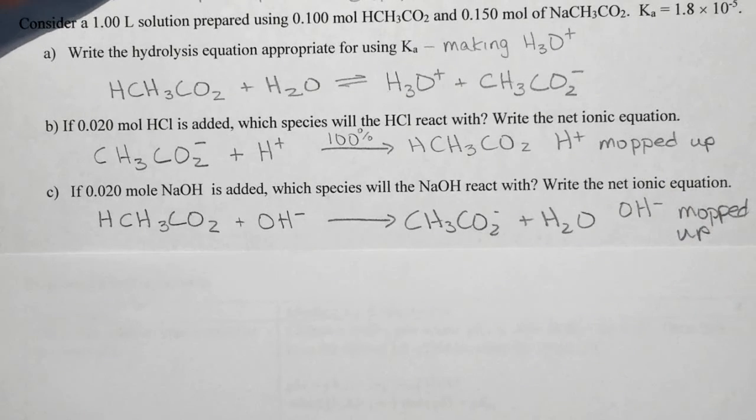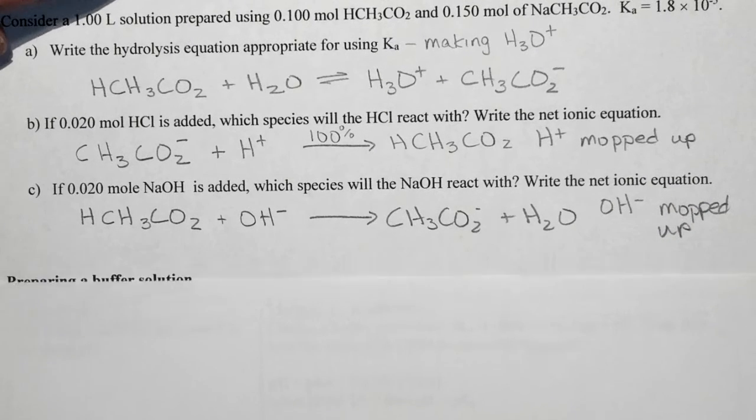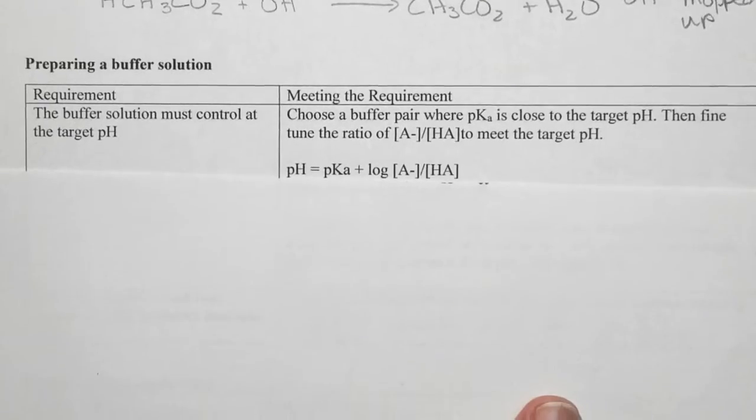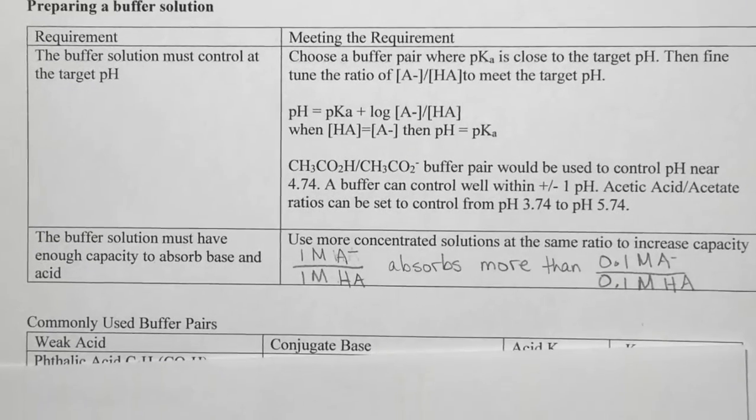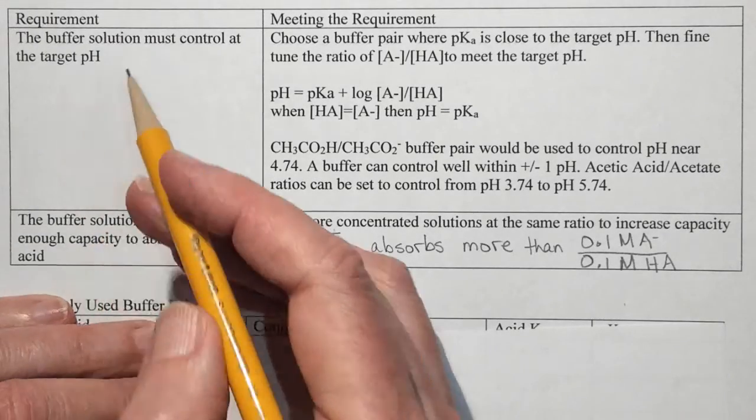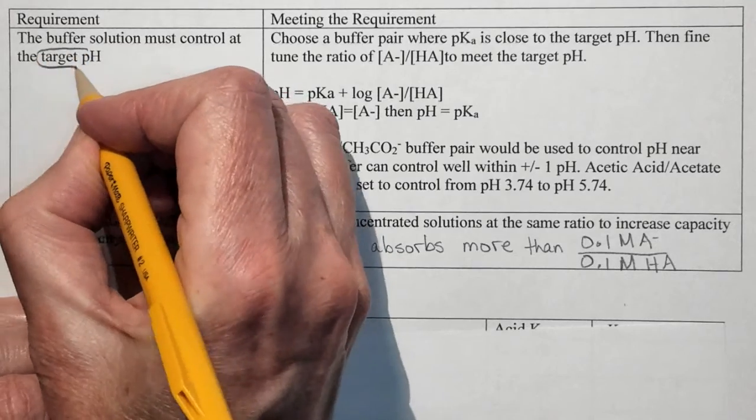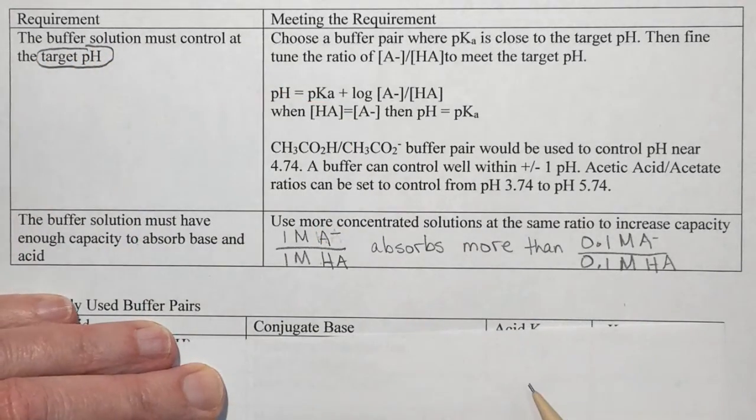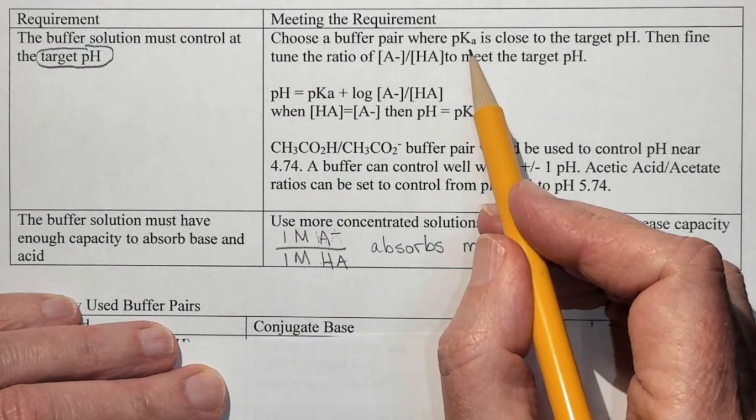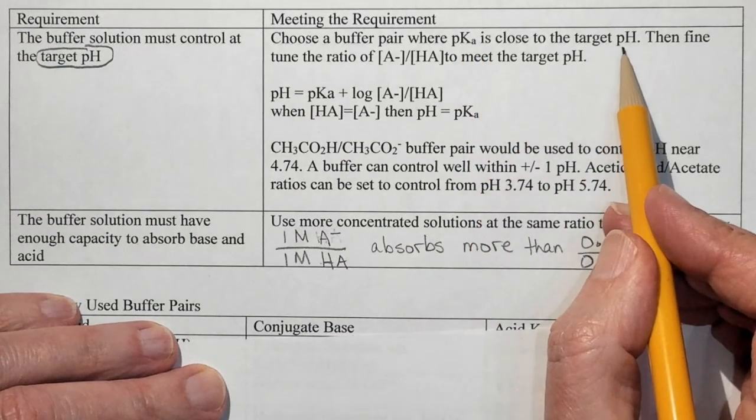So let's say we want to make an effective buffer. We are going to look at preparing a buffer solution. In terms of preparing a buffer, our requirements is that the buffer solution must control at the target pH. So the way we do that is to choose a buffer pair where the pKa is very close to the target pH.